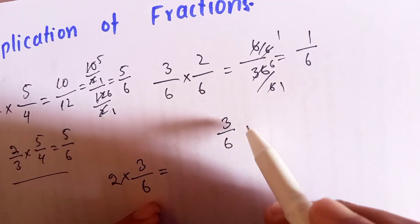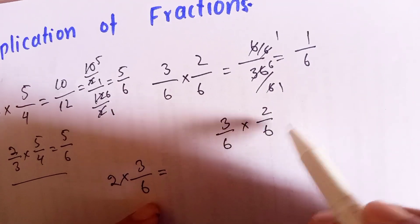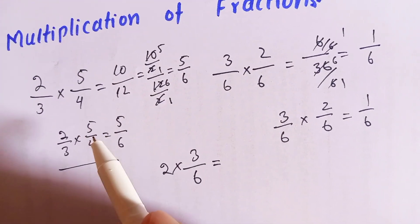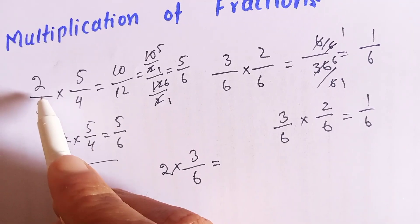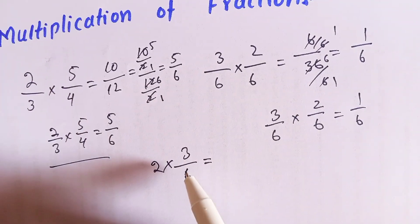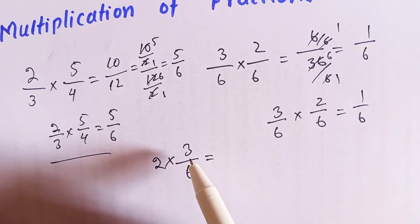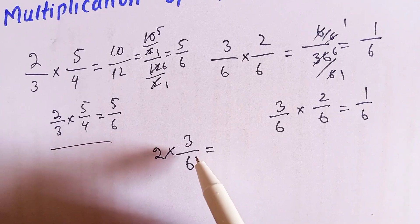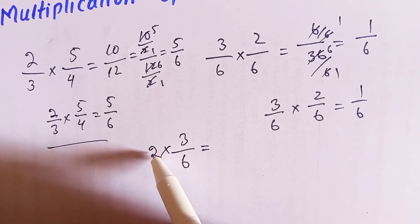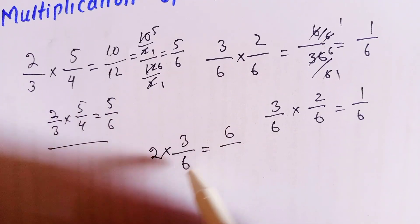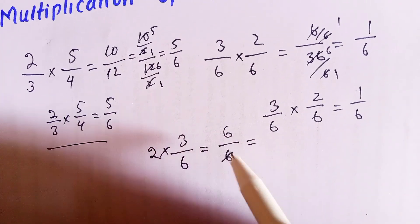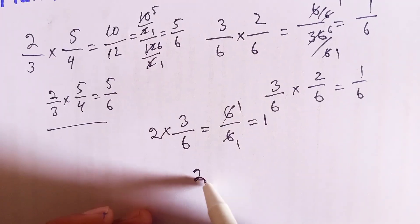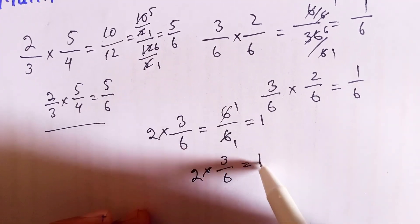So three over six multiplied by two over six is equal to one over six. Now, what about multiplying a fraction by a whole number? It is very simple — we multiply two with three over six. Two times three is six, and the denominator stays the same as six. Six over six equals one, so the answer is one.